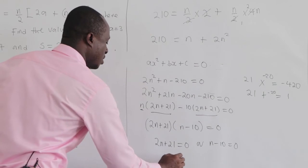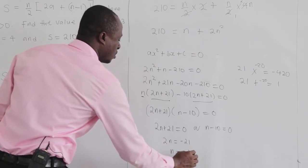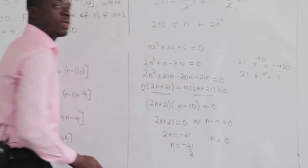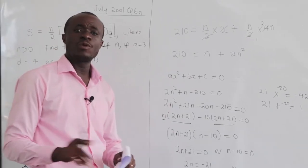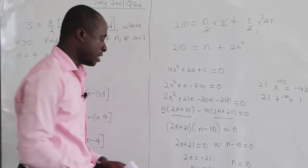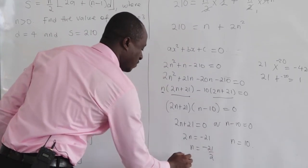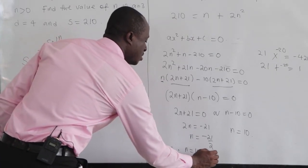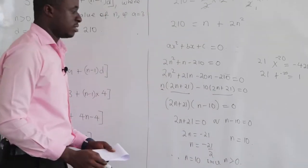Since the product equals zero, either 2n plus 21 equals 0, giving n equals negative 21 over 2, or n minus 10 equals 0, giving n equals 10. From the question, n must be greater than 0, so our answer is n equals 10.